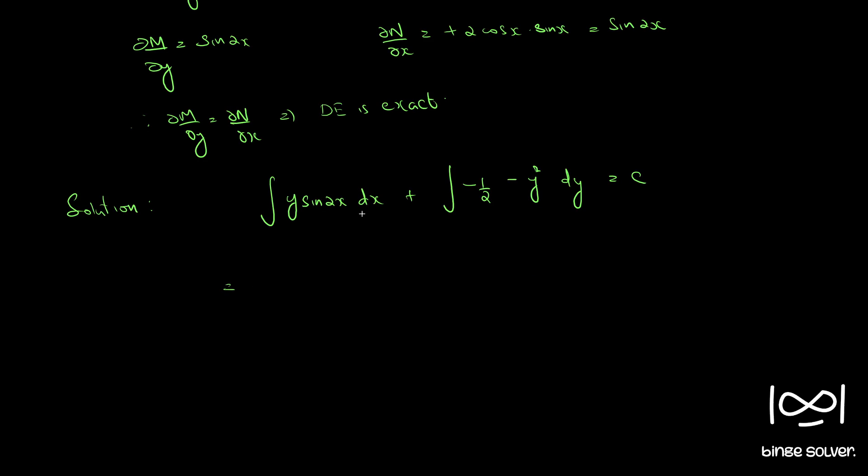So we have y sin 2x integral y sin 2x with y as a constant is minus cos 2x by 2 minus y by 2 minus y cube by 3 equal to c.